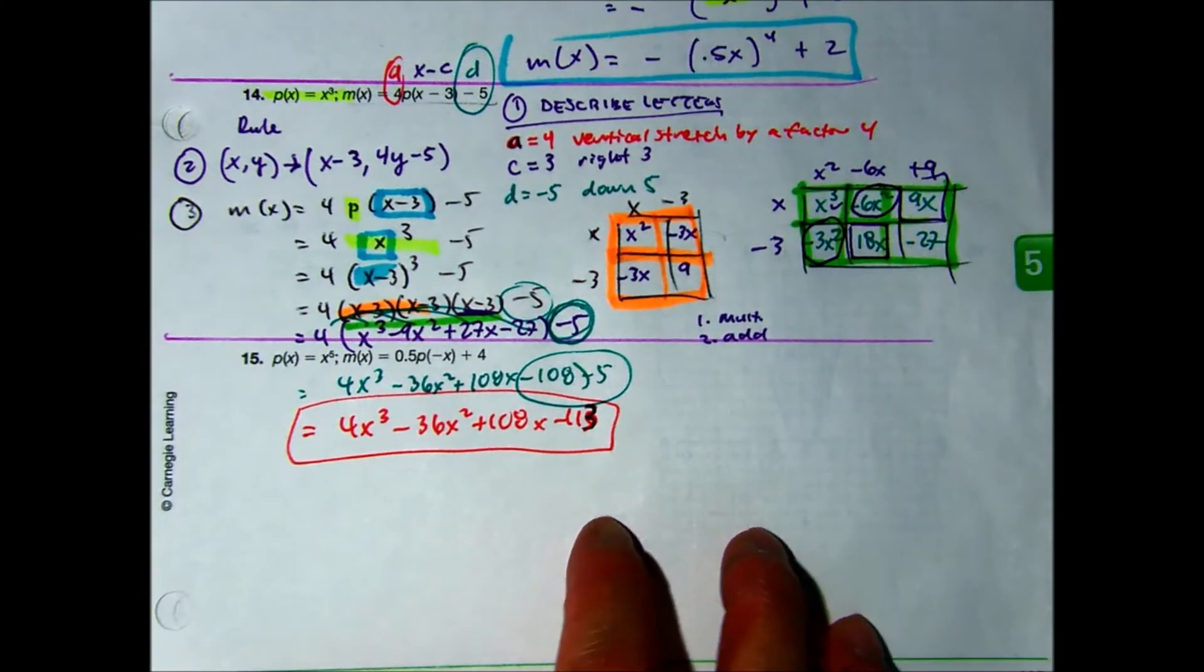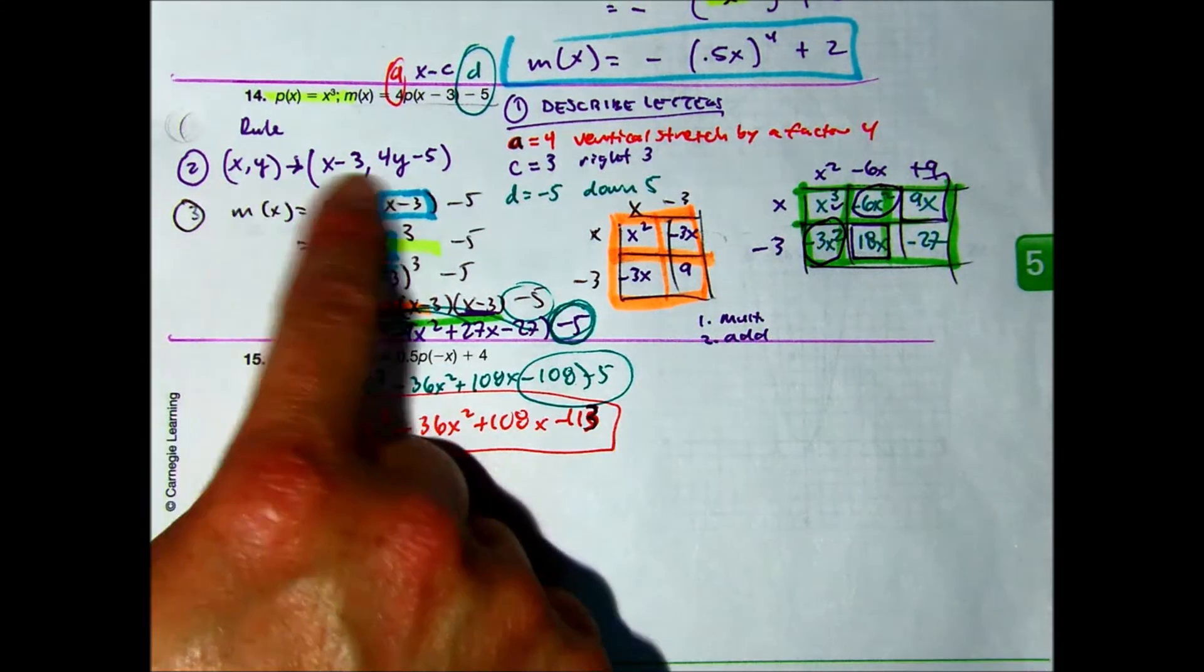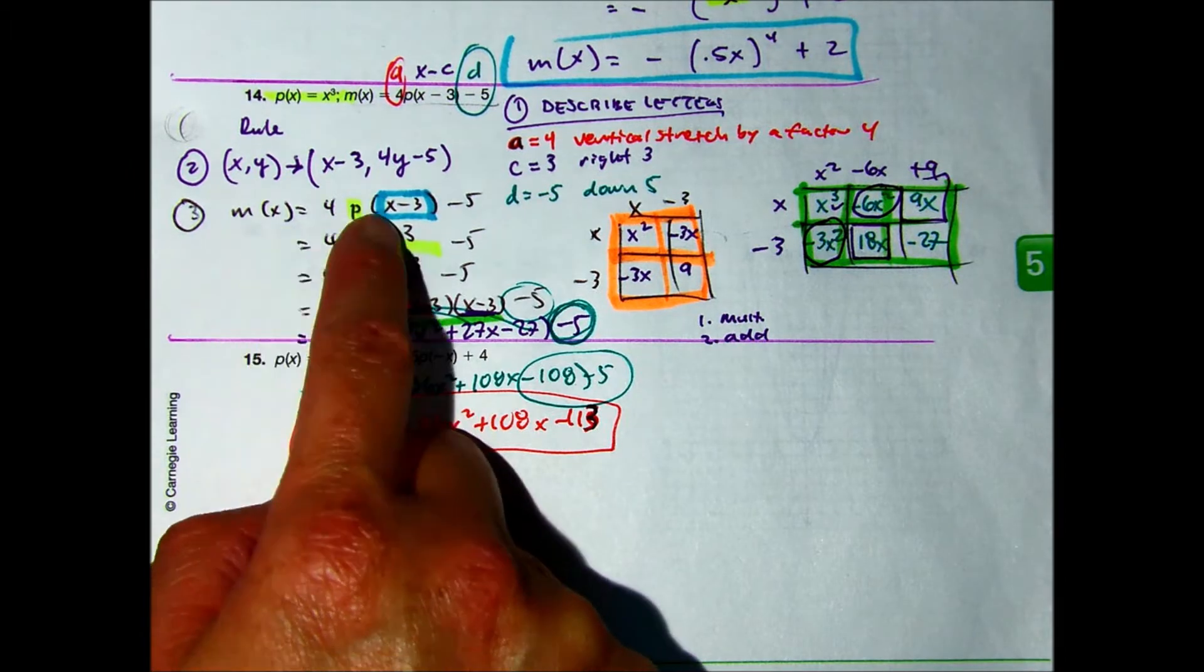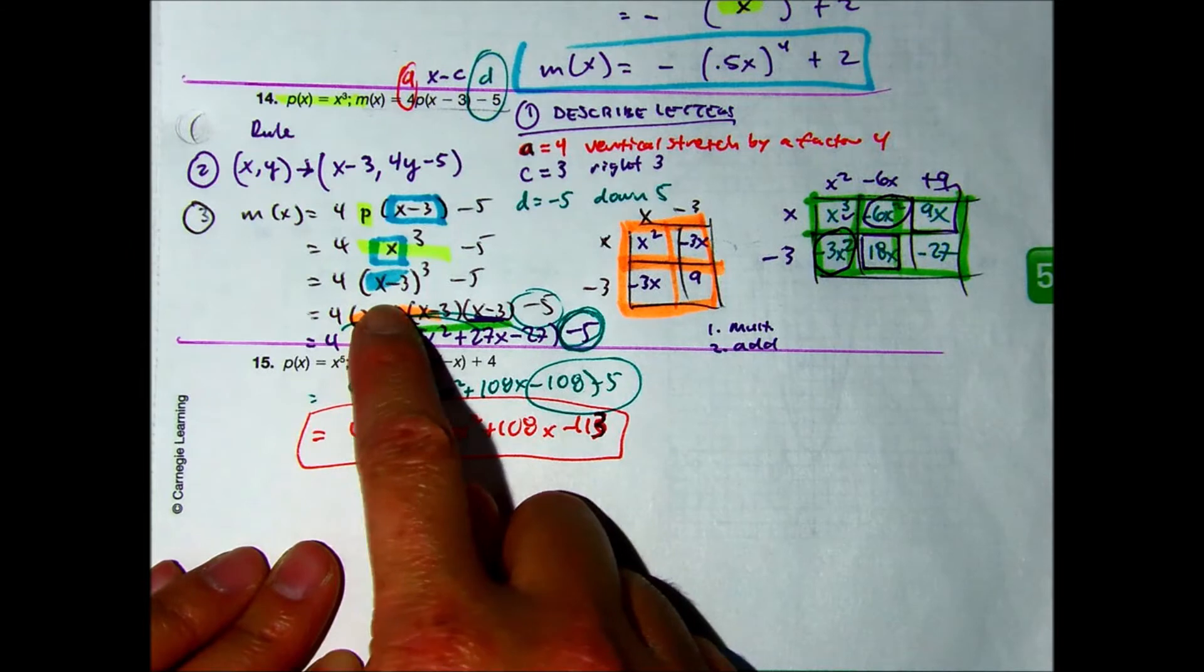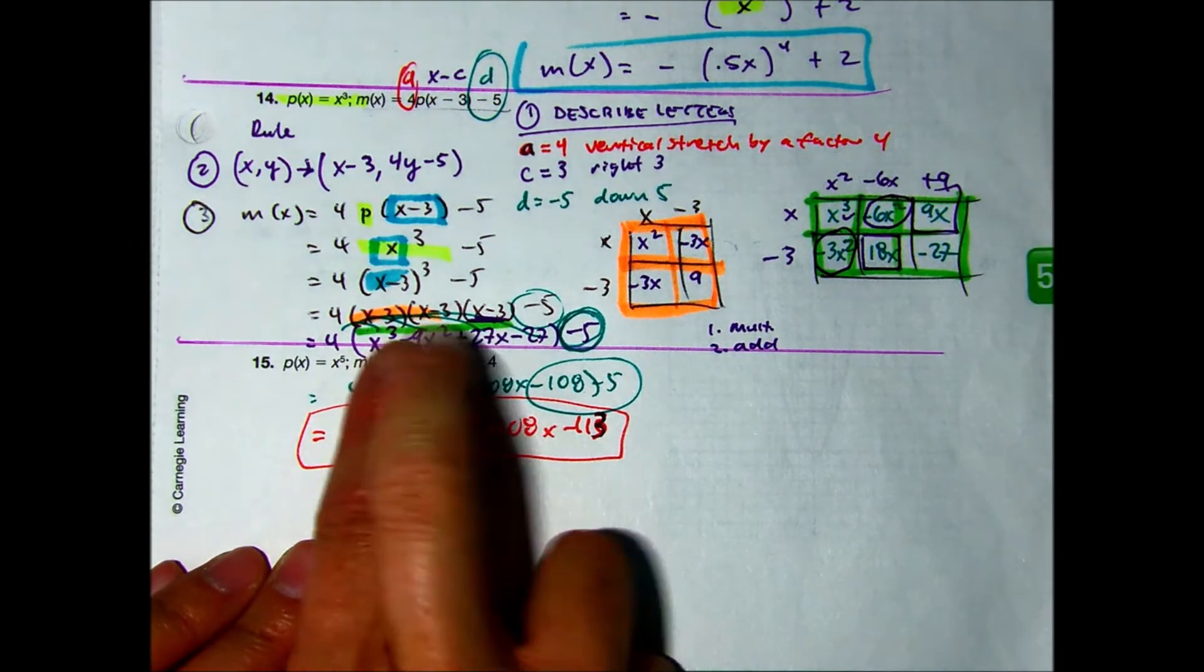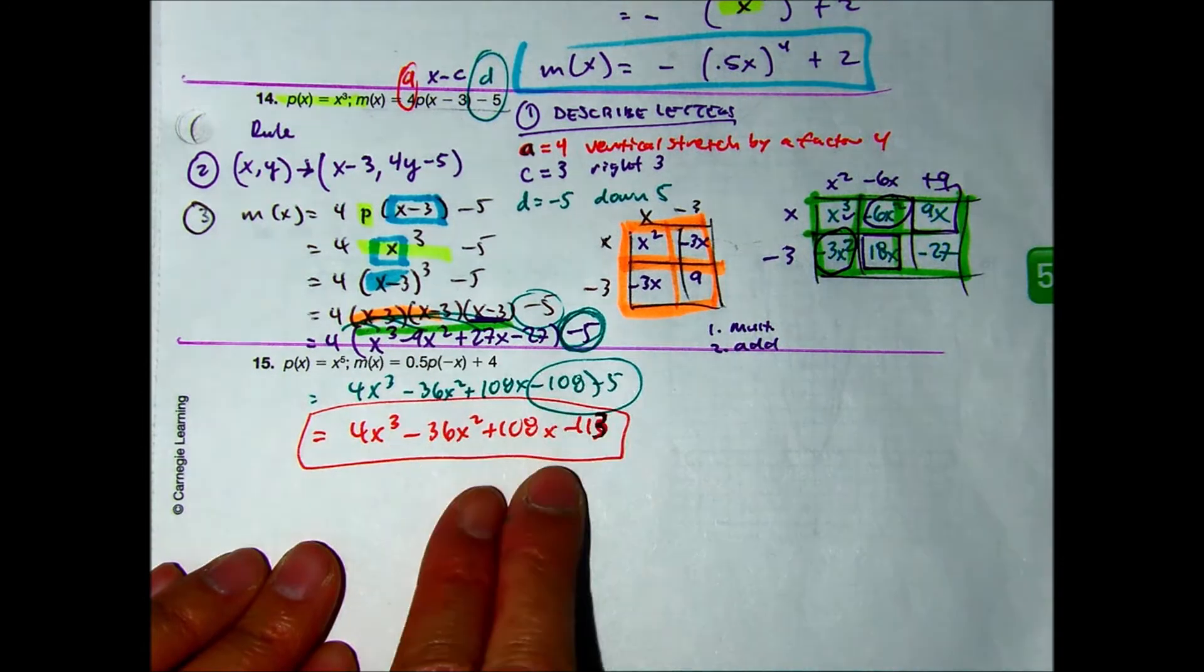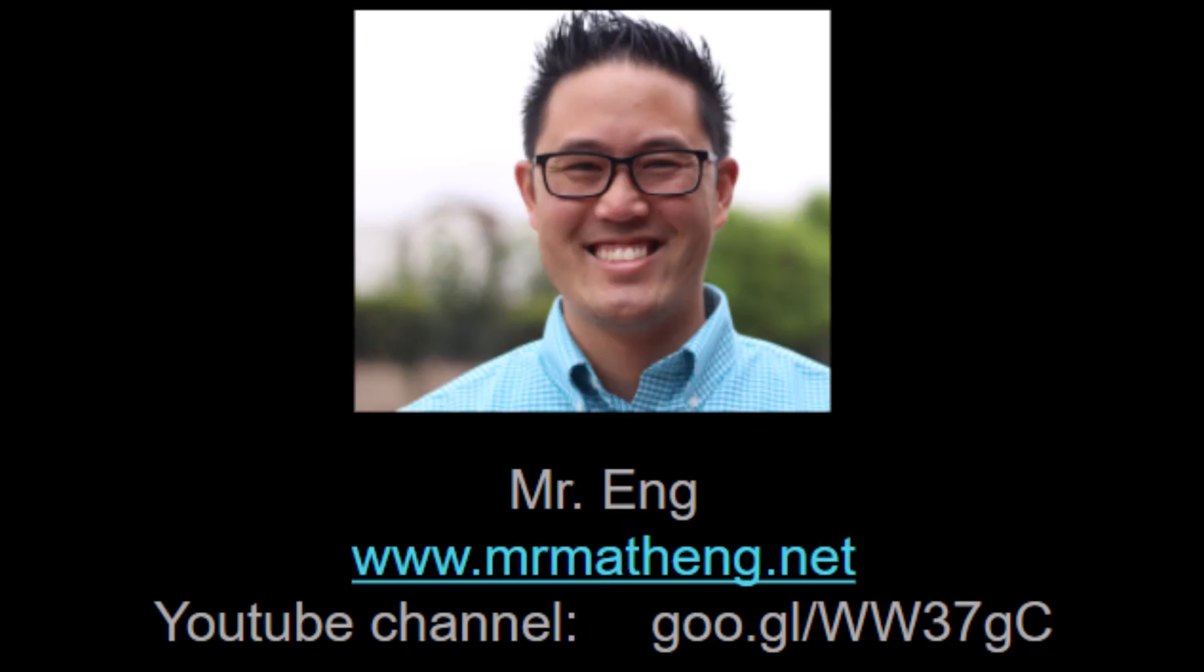So to review in this problem what we did, I looked at it, I identified the letters, and then described them. I created a rule. And then I'm making this specific equation. Basically I'm doing a substitution. P of x. And then every x had to be x minus 3. x minus 3 cubed is written out 3 times. And basically you're using foil or your boxes. Don't forget to distribute the 4 and then subtract 5. I love math. You don't love math. What's wrong with you?